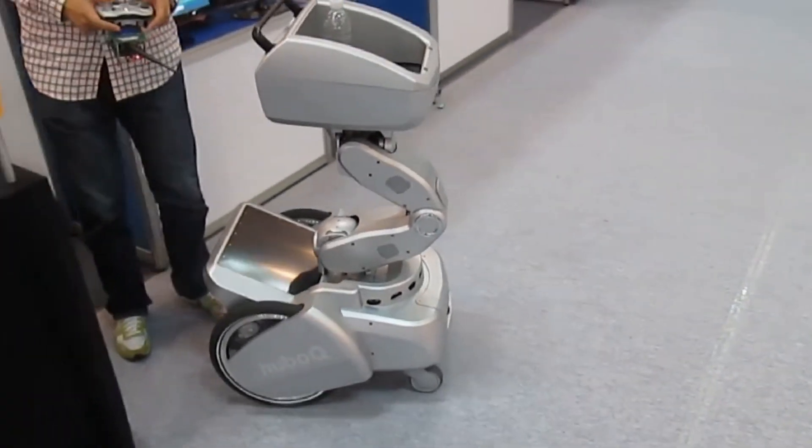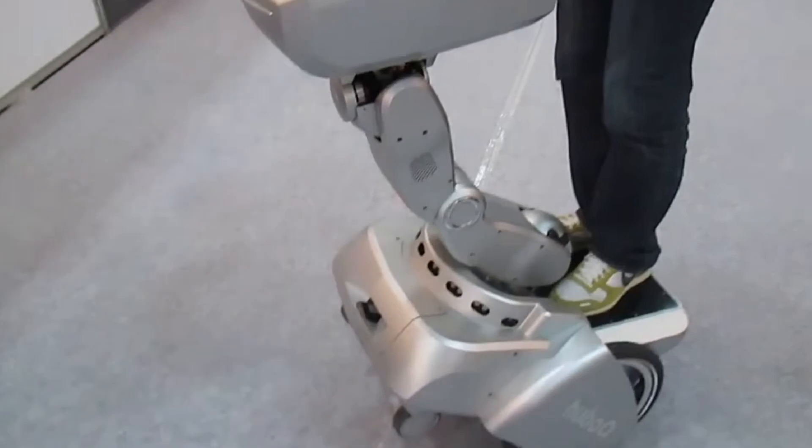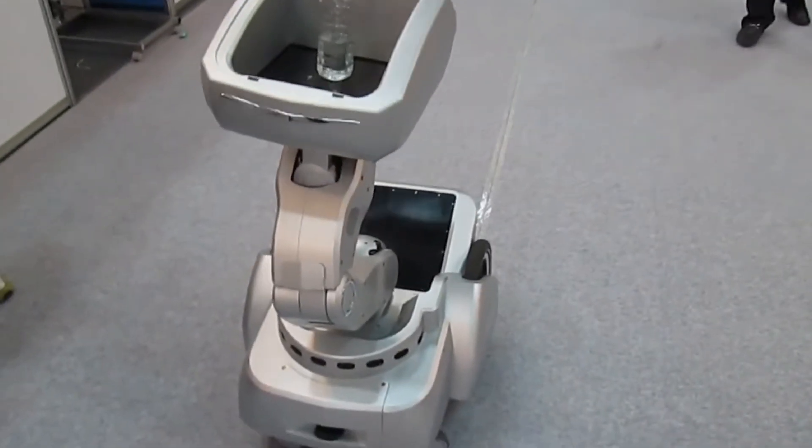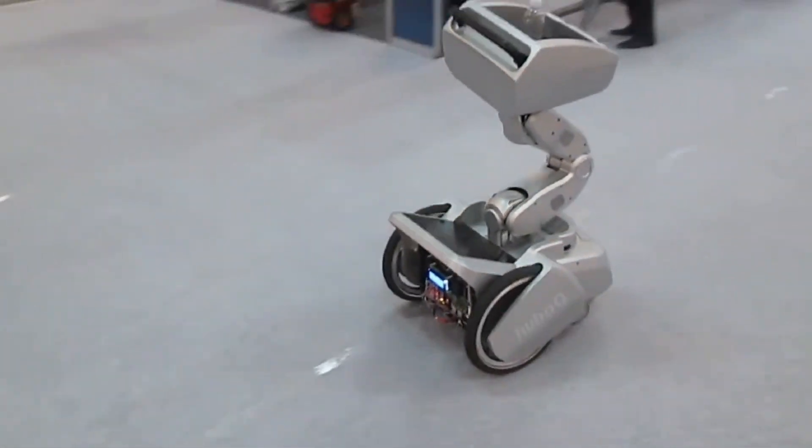The robot's ergonomic design features a comfortable seat for passengers, ensuring a smooth and pleasant ride. HUBO-Q's ability to autonomously plan and adjust routes based on current conditions makes it an innovative solution for personal mobility in urban areas.